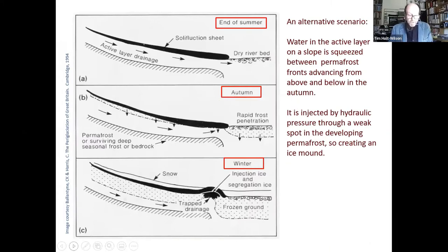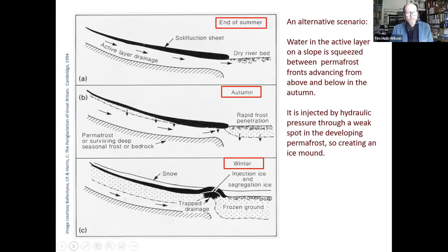Here's an alternative scenario, this one from Sweden. You've got a slope with an active layer sandwiched between a solid solifluction sheet and the bedrock, and a dry riverbed on the right. In autumn, water moves downslope within the active layer and gets squeezed between permafrost fronts encroaching from below and from above. Solid bedrock also helps in this squeezing process. The water is then injected upwards by hydraulic pressure through a weak spot in the developing permafrost, creating an ice mound.